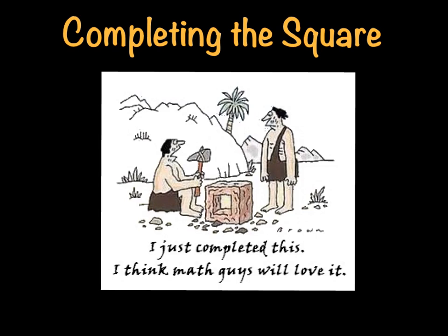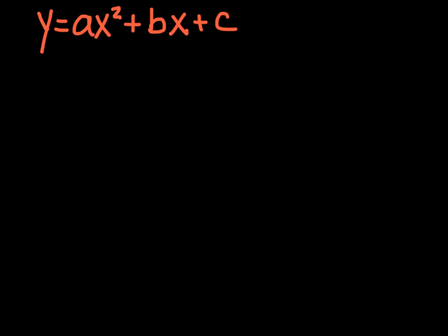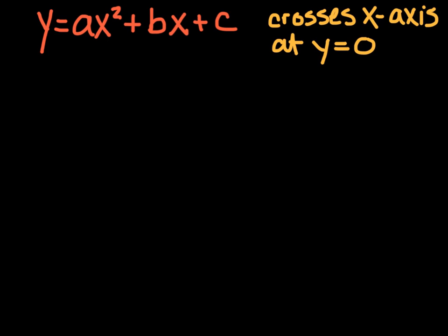Hello kids, this video is about completing the square. Here we have a standard quadratic in standard form ax squared plus bx plus c, and we know that these cross the x-axis when y is equal to 0. When we solve a quadratic equation, we call it finding the roots, or finding the zeros, or finding the x-intercepts.